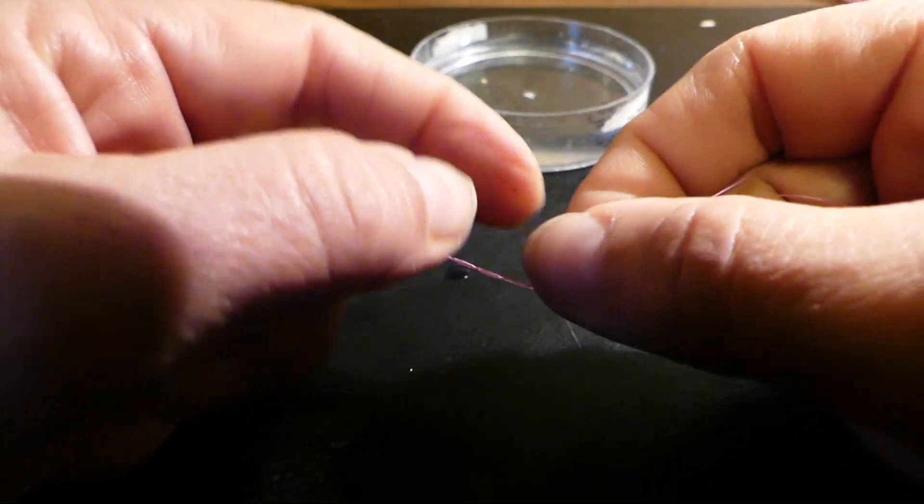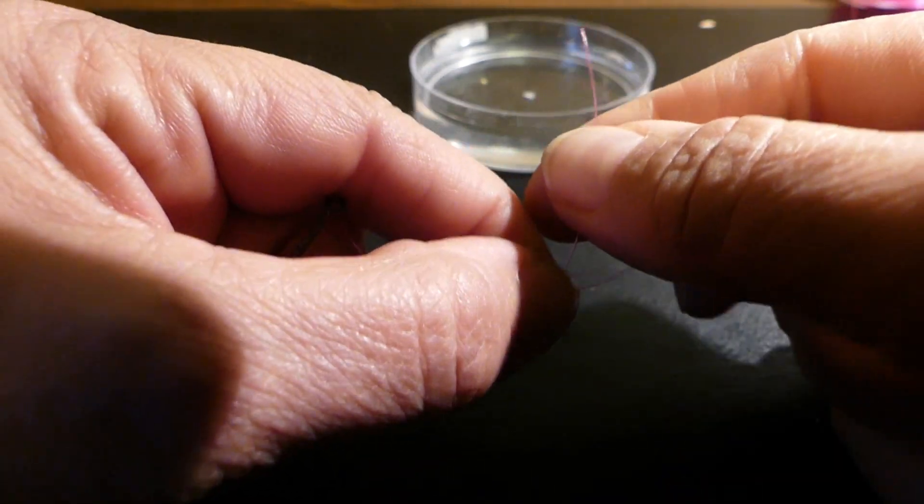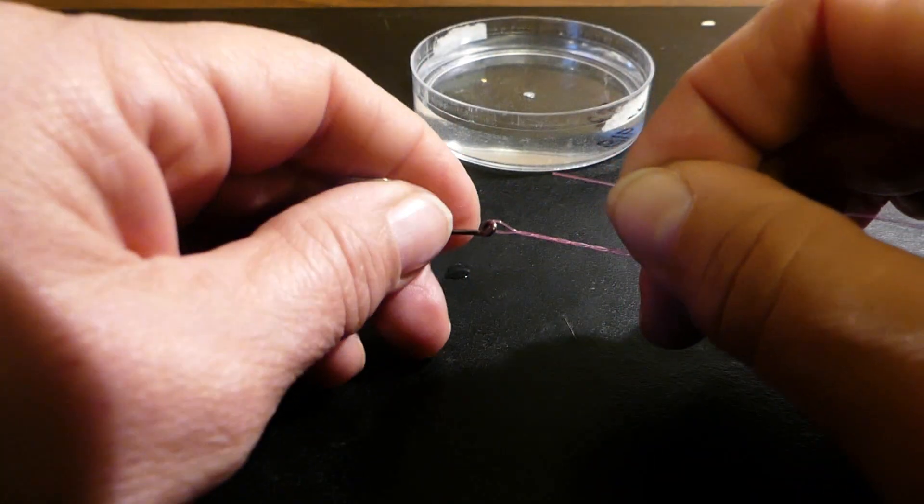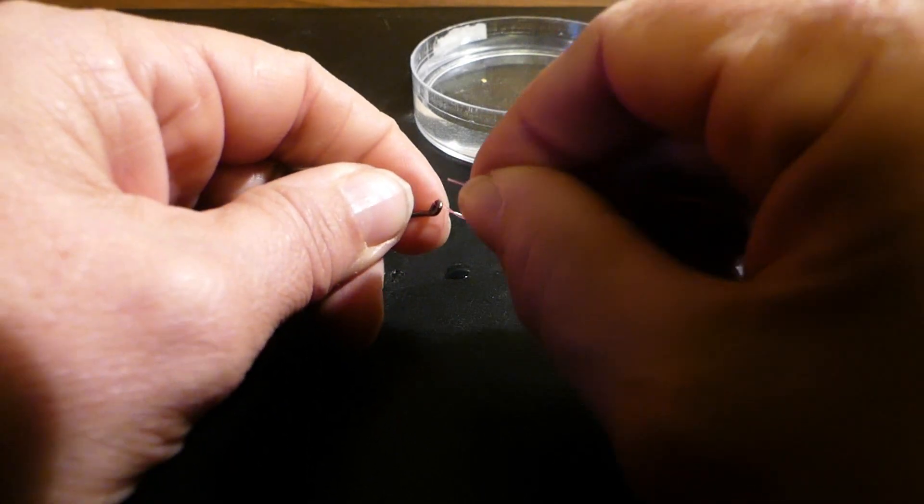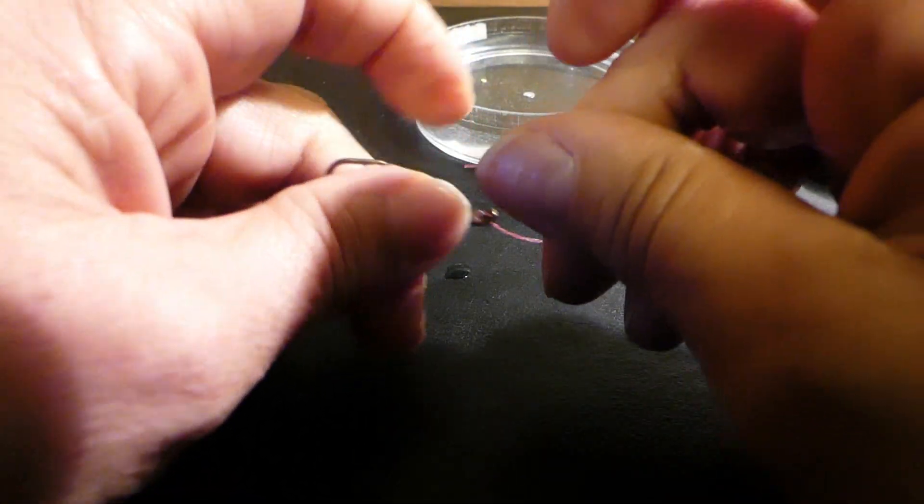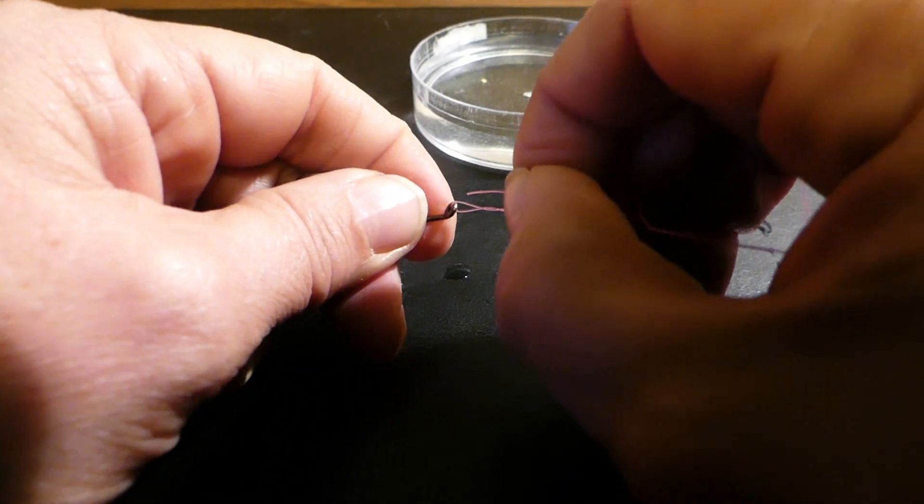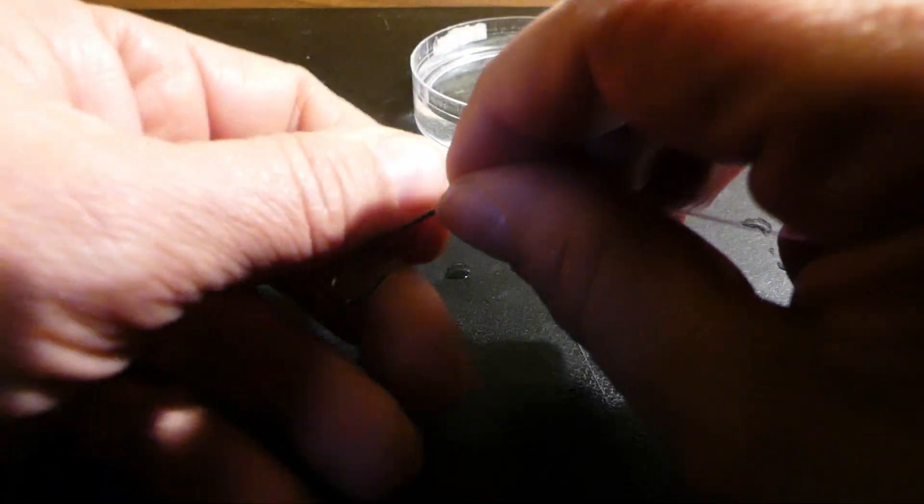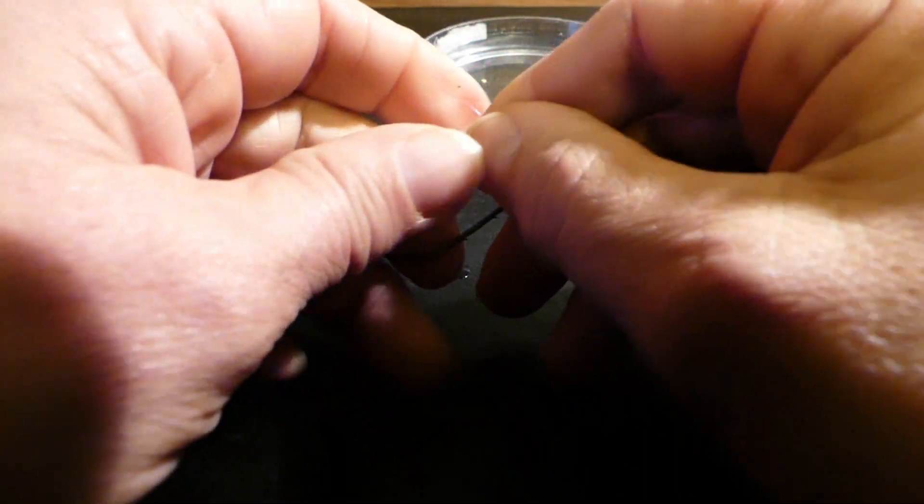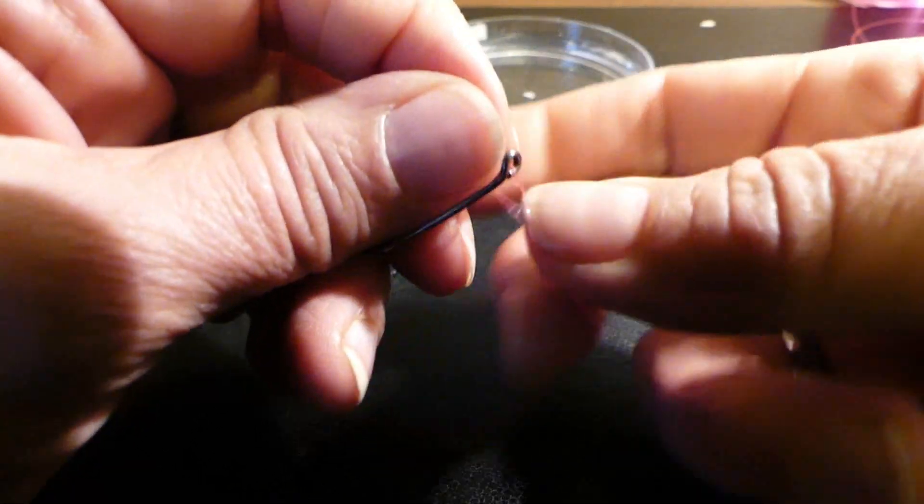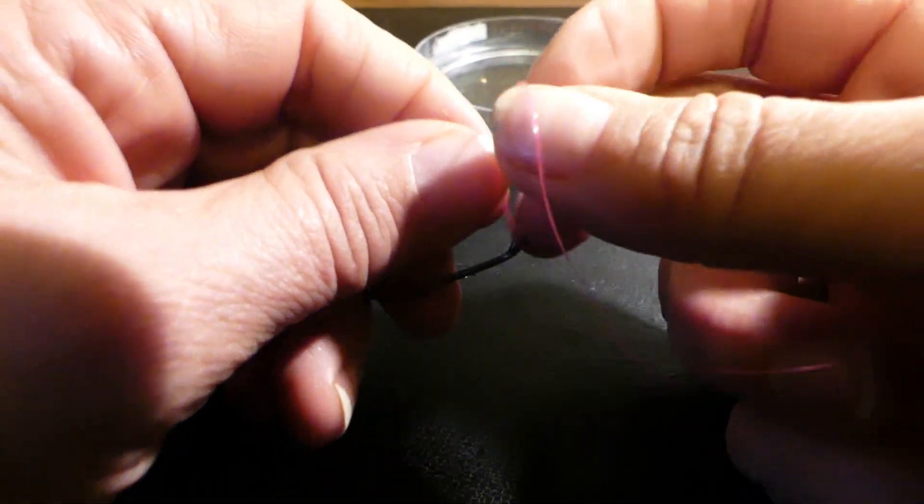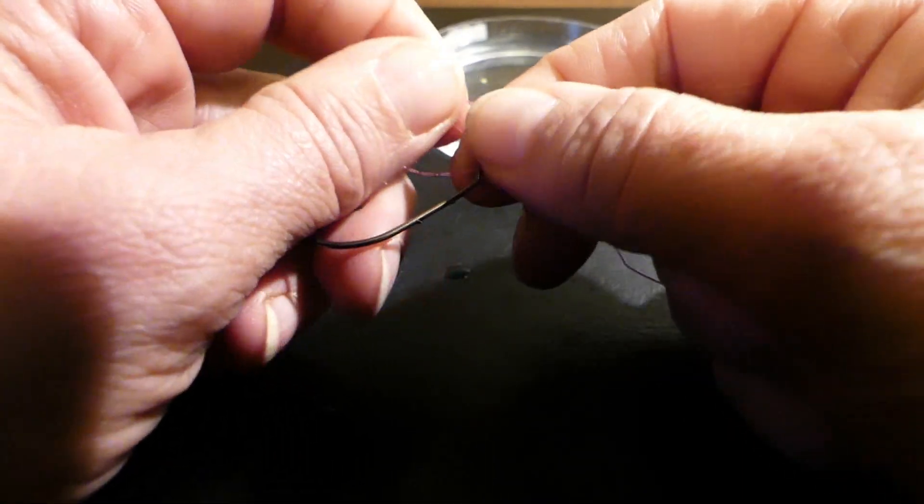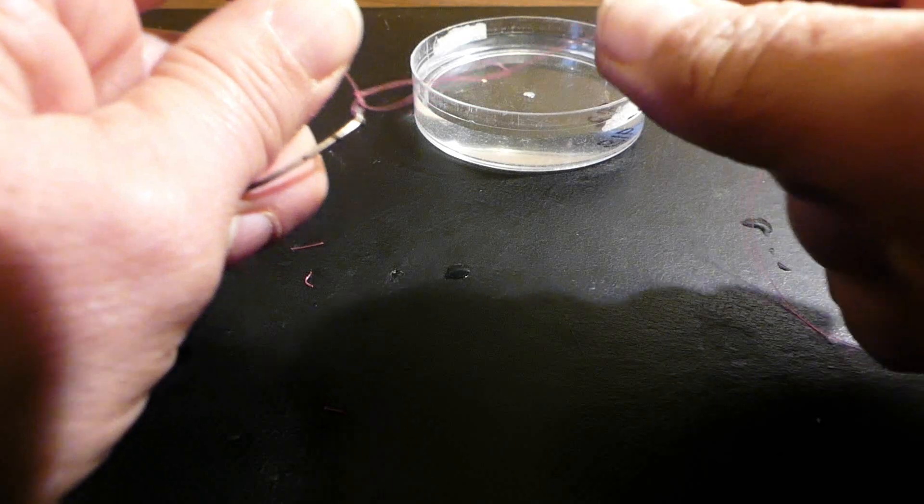Grab hold of the tag end. Again, find that loop at the top of the eye. Pass it through there like you did the last time. Grab hold of the tag end. Now, this loop here, you're going to pass that tag end through this loop here as well before we just cinch down on it.